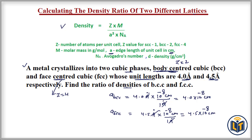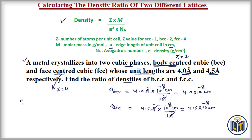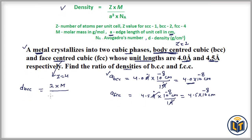Applying the density formula for the BCC structure: density of BCC equals Z (which is 2) multiplied by M (the atomic mass), divided by a-cubed multiplied by Avogadro's number N_A. Here, a for BCC is 4.0 multiplied by 10 to the power of minus 8 centimeters. Since it is a single metal crystallizing into two lattices, the atomic mass M and Avogadro's number N_A will be the same in both expressions.